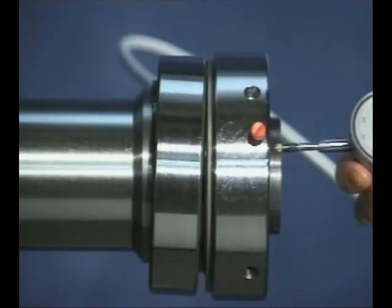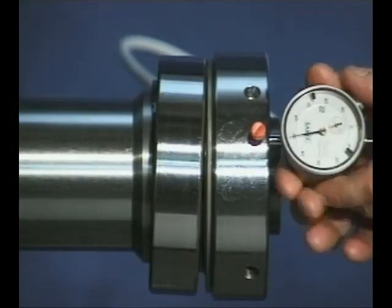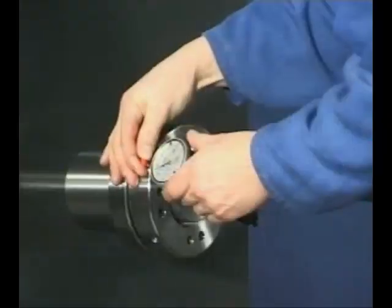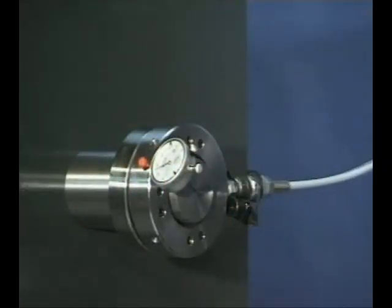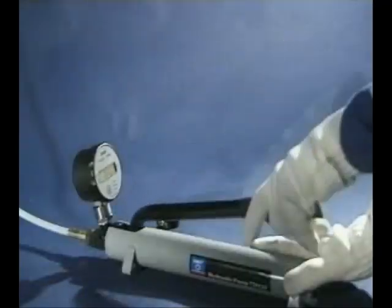From values obtained from the SKF drive-up tables, the bearing is initially pushed onto the sleeve until the predetermined amount of drive-up pressure is recorded on the pressure gauge. This establishes the start position for the drive-up.